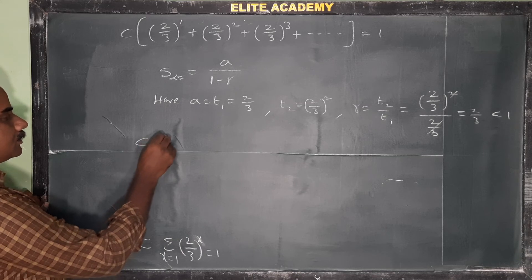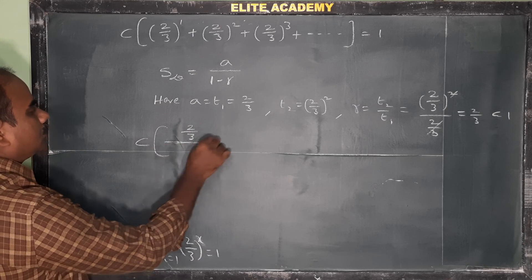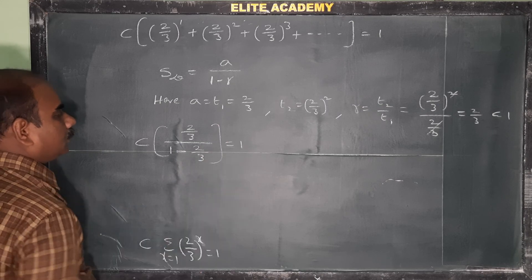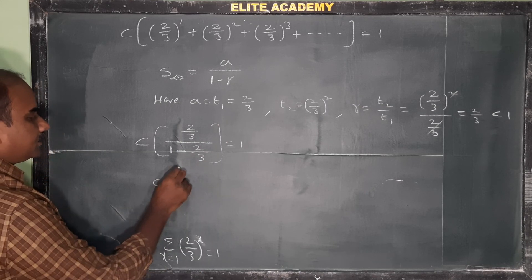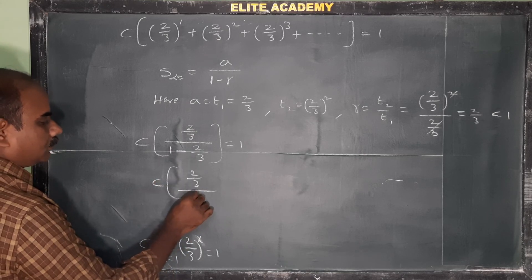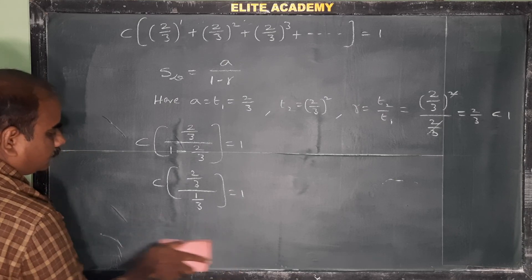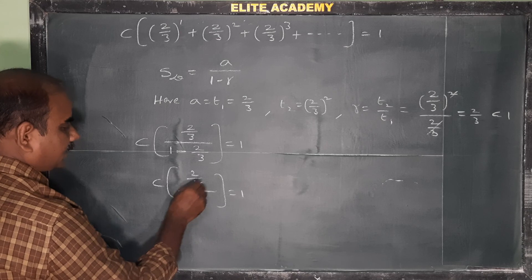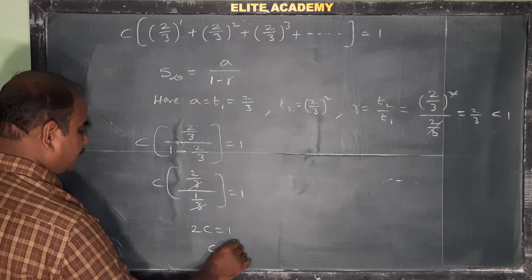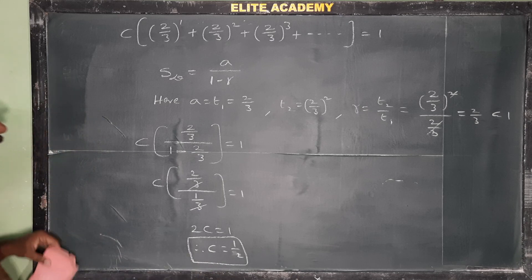Substituting into the formula: S∞ = (2/3) / (1 − 2/3) = (2/3) / (1/3) = 2. Therefore c · 2 = 1, which gives 2c = 1, so c = 1/2. This is the answer.